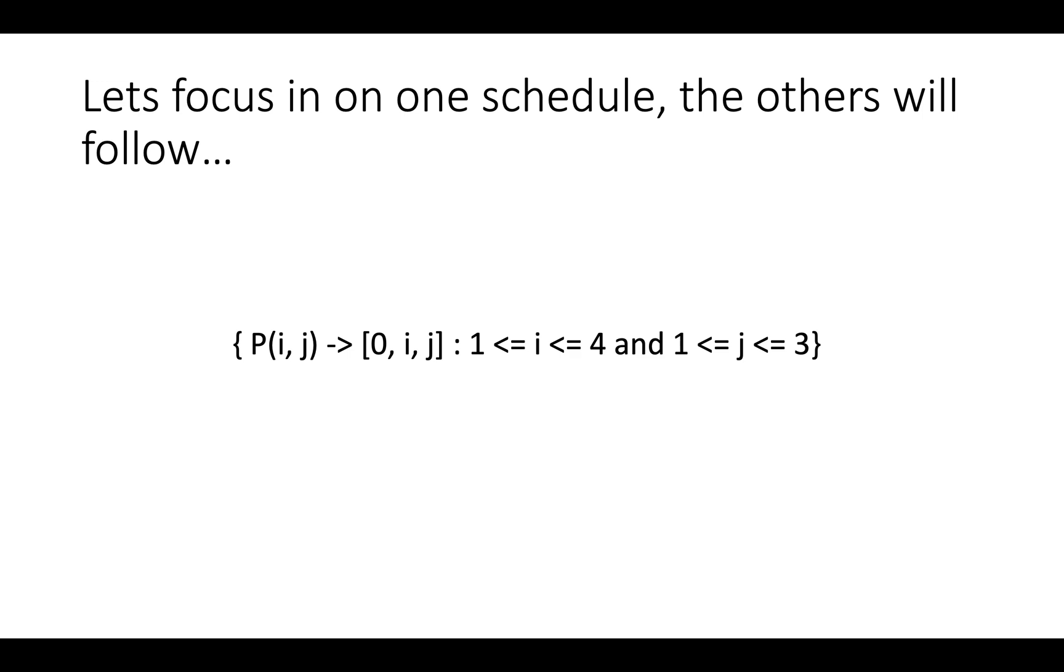Well first let's focus on one schedule and the rest will follow because it's done in a very uniform way. Let's suppose we're just trying to represent this function that maps points in the two-dimensional space P(i,j) to points in this 3D space [0, i, j] for i between 1 and 4 and j between 1 and 3.